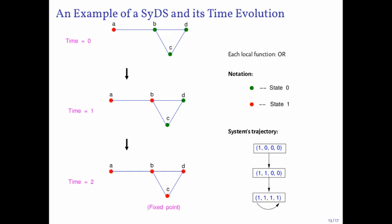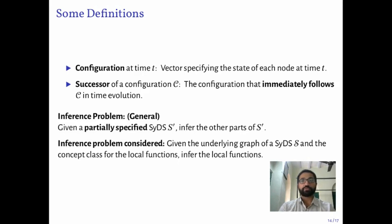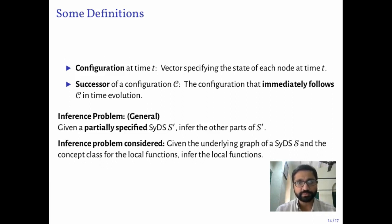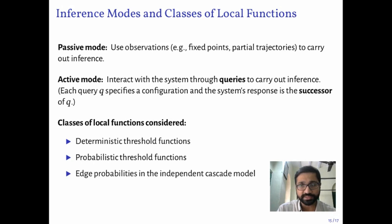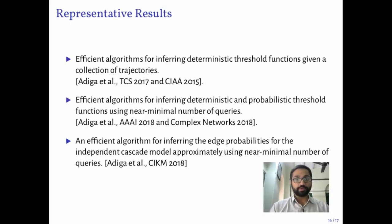The trajectory of the system for this example is also shown on the slide. At any time t, the system's configuration is a vector specifying the states of the nodes; for a deterministic system, the successor of a configuration is unique. The work in our group considers the specific problem of inferring the local functions given the network and the class from which the local functions have been chosen. Inference problems under two modes were considered: passive mode, where one can only observe the system, and active mode, where users submit queries — each query being a configuration, and the response the successor configuration. The main goal is to use as few queries as possible. Our group has been exploring this problem space for some years, and some representative results are shown here.